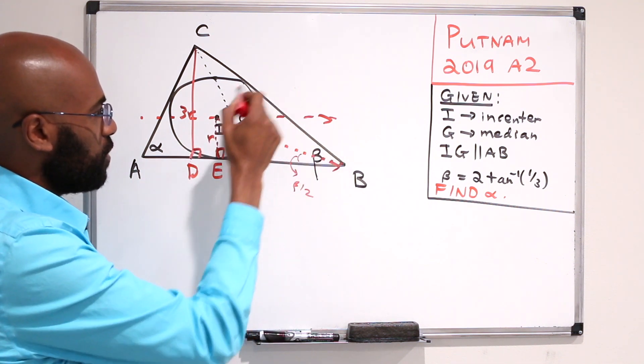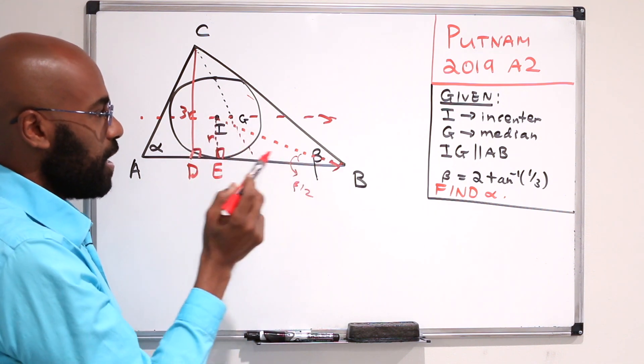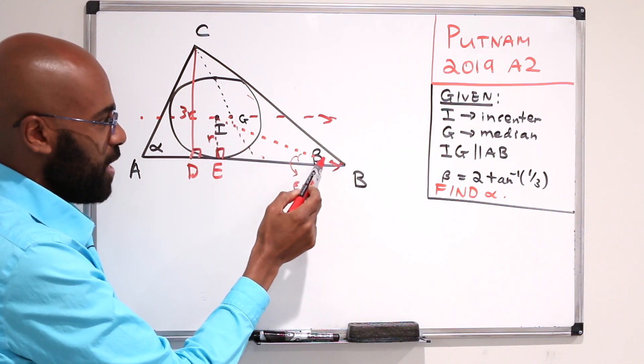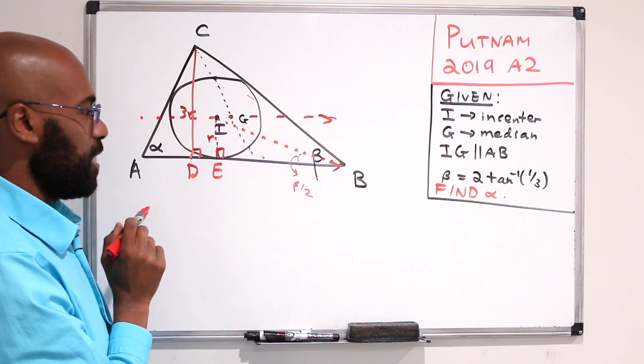And this triangle here would be similar to this triangle over here, and the similarity would have the two angles over here being the same. So these angles get split in half.